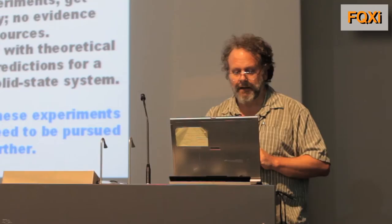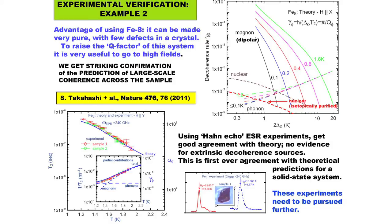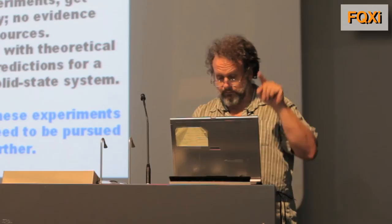The message was: go to low temperatures or high magnetic fields. About eight different groups tried to do this, and success was published about a month ago in Nature by this group — an experimental group at Santa Barbara. The agreement with theory was amazing, without adjustable parameters. This is the first time ever that theoretical predictions for decoherence rates have agreed without adjustable parameters with experiment.